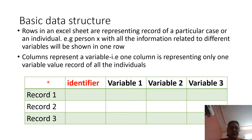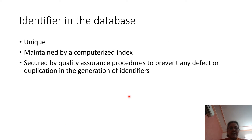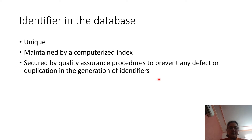In an Excel sheet we have columns and rows. Each column represents one variable, and each row represents all the values of variables belonging to a particular individual who can be identified by a unique identity. Whenever we are entering data, we should create a unique identifier for each research participant so we can share the data with others without sharing the individual's identity. This unique identifier should be maintained by a computerized index and pass all quality assurance procedures so there is no duplication.